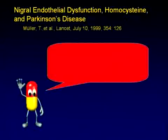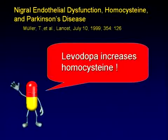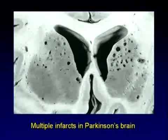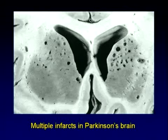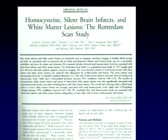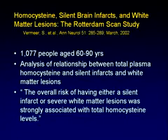Simply stated, Levodopa increases homocysteine. This is a very important thing to consider in patients receiving Levodopa therapy. I'm not saying don't use your Sinemet — I'm saying that if you do, follow the patient's homocysteine. But why do people not talk about homocysteine? Is there a patented drug to lower homocysteine? No. You simply tell people to increase their consumption of B vitamins and monitor the homocysteine. When we see holes in the brains of our Parkinson's patients and check their homocysteine levels, we see they are elevated. Homocysteine leads to multiple small strokes in the brain, and when you look at plasma homocysteine and the risk for silent infarcts, the overall risk increases.